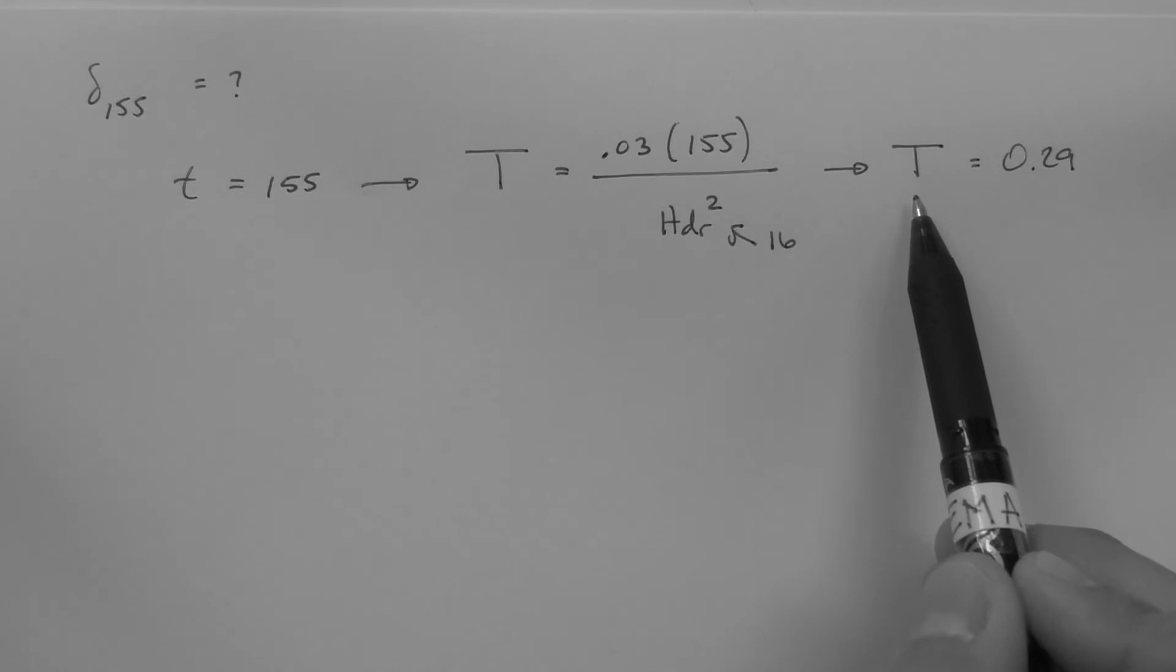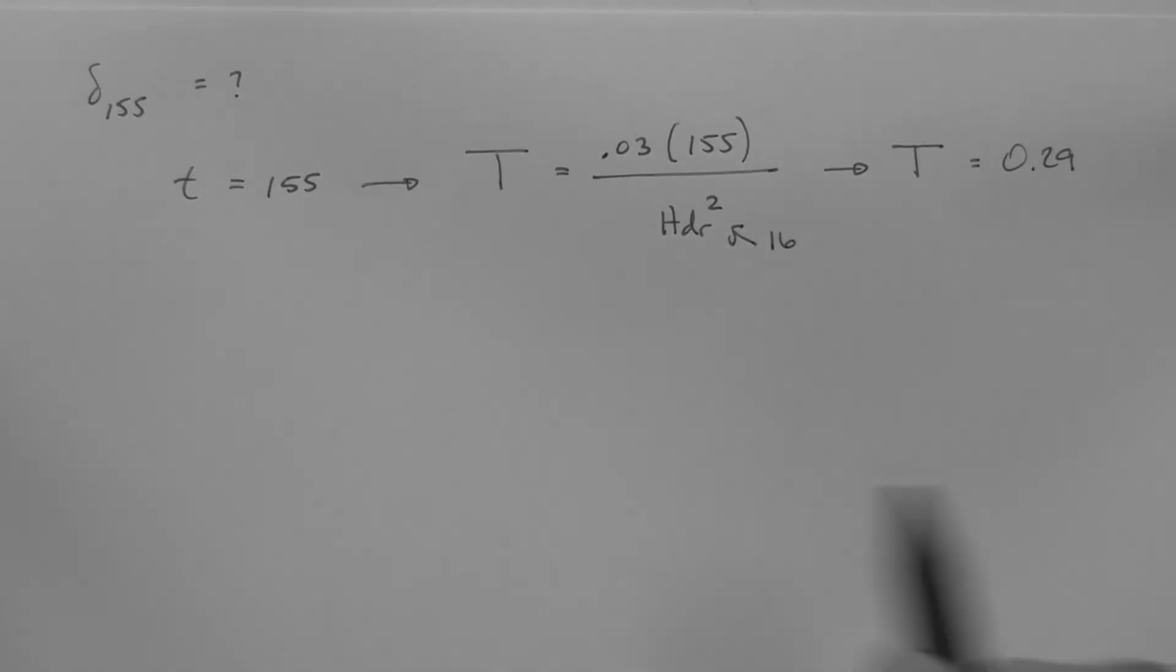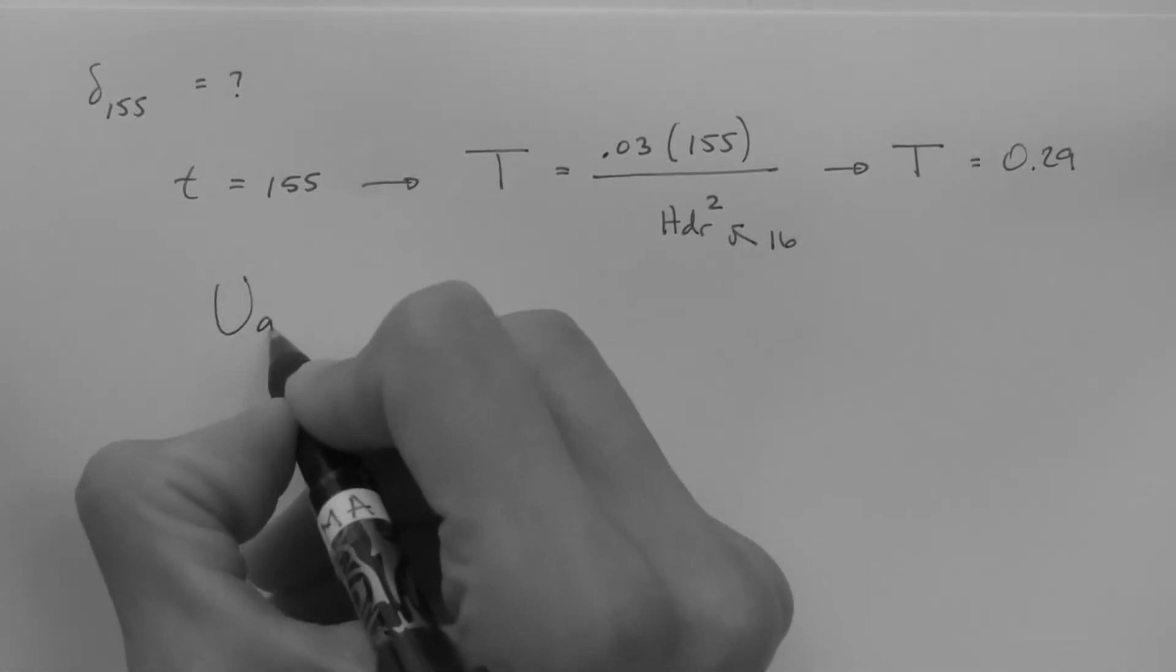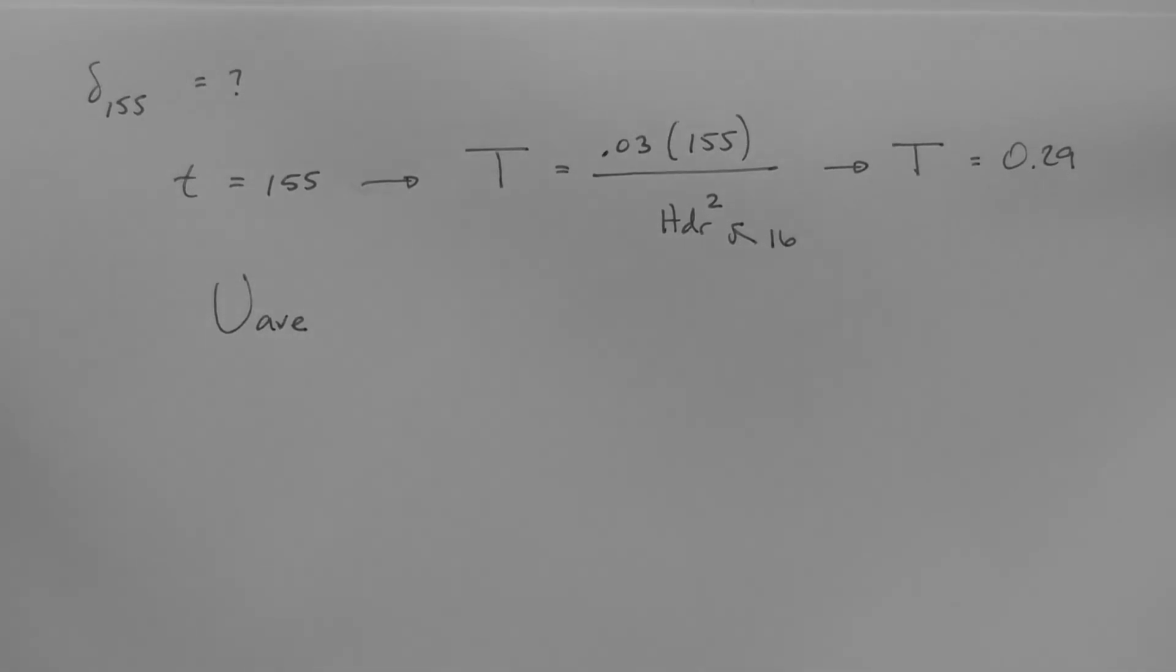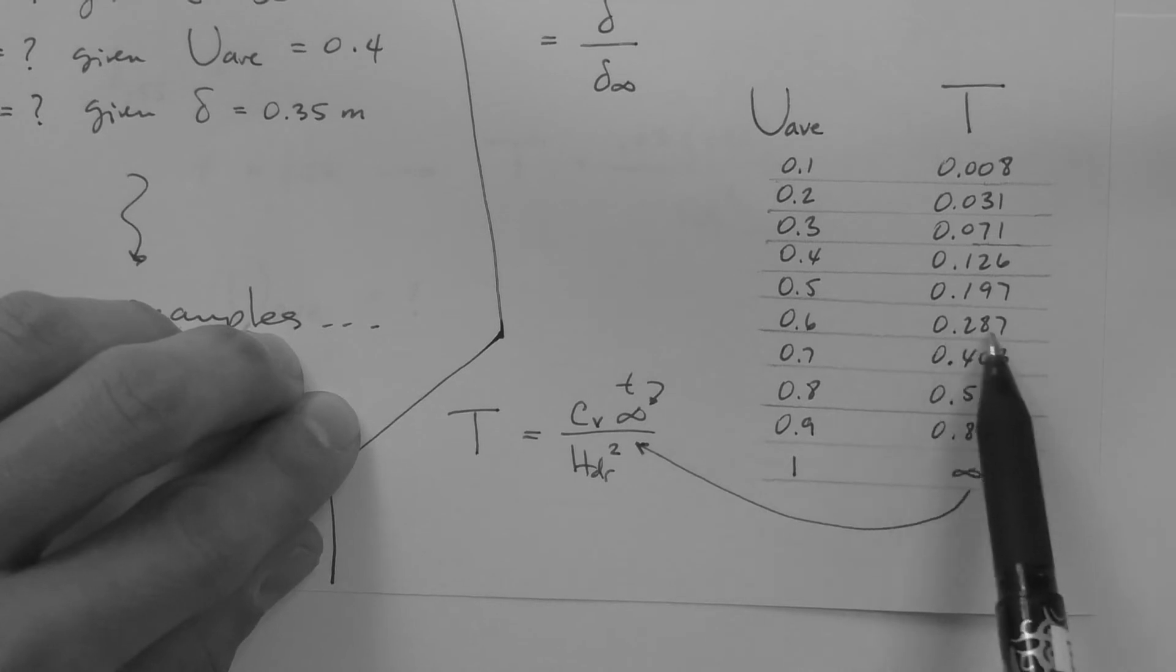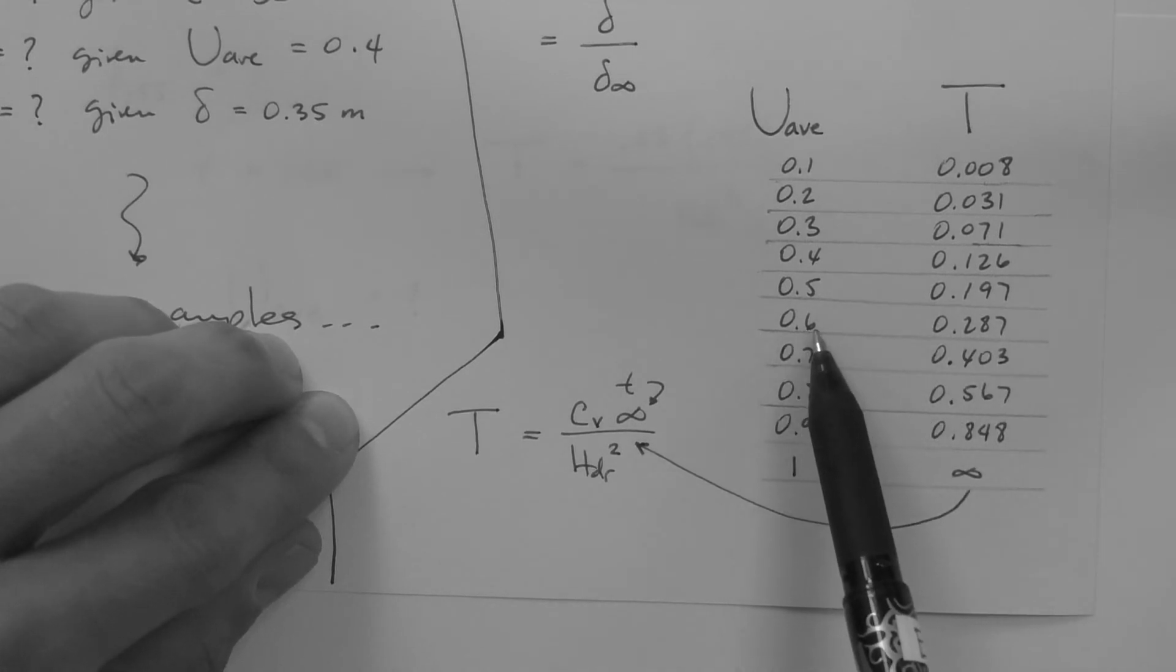This means that T is equal to 0.29. This time factor corresponds to an average degree of consolidation. We can get that with our table. 0.29 is basically 0.287. So, our U average is 0.6.